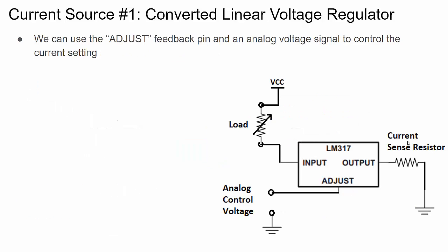To make an adjustable current source, we can replace the fixed resistor with a potentiometer, or use an automated approach: connect the current sense resistor across the output, place the load between the input and VCC, and connect the adjustment pin to an analog control voltage. By varying this control voltage we change the voltage drop across the sense resistor and thereby control the current through the load.